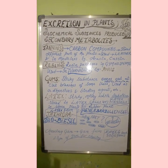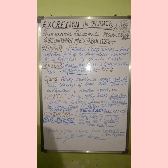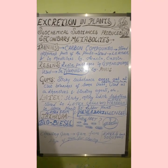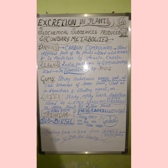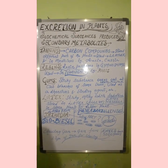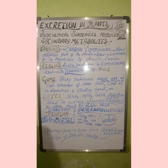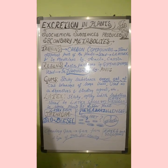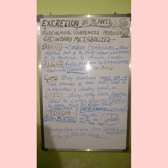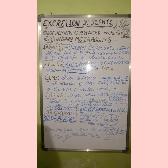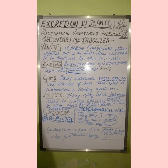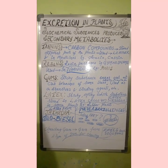Chewing gum is a type of gum for chewing whose history dates back 5000 years. Modern chewing gum is originally made of natural latex from plants.